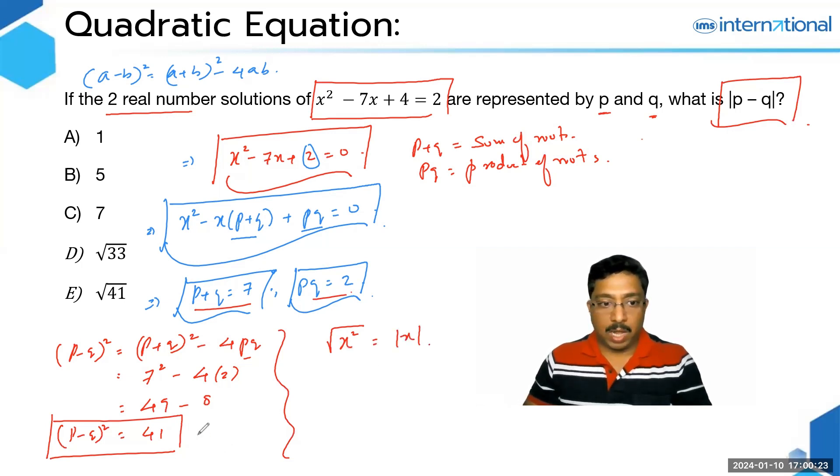Understand that the square root of x² is |x|. Therefore, taking the square root on both sides, you have |P - Q| = √41. Hence the answer to this question is E.